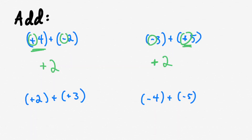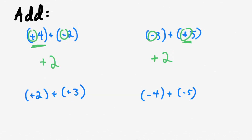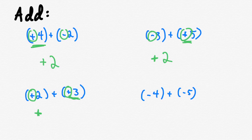Let's take a look at the next one: positive two plus positive three. Which of these numbers has the greater value? Three does — so that tells us we have a positive number. But hold on — are the signs different? No they're not. When the signs are the same, instead of doing a subtraction, we add them. Because they're going in the same direction on the number line, they're both contributing, so this is two plus three which is five. Positive two plus positive three is just two plus three equals five.